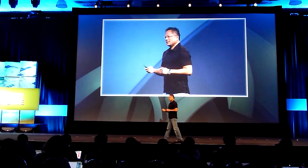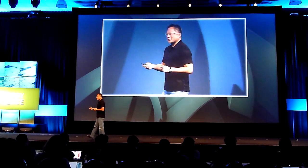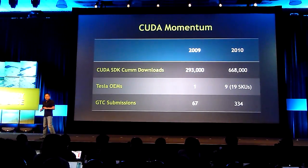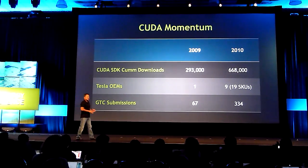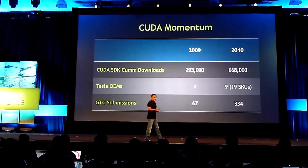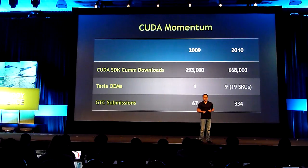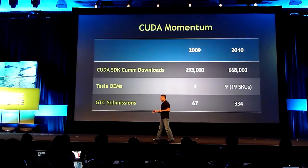The third metric I selected reflects the research that people are actually doing — how they're really using this technology for discovery. The one I chose was GTC submissions. Last year we had 67 papers, which we thought was terrific for the first year of GTC. This year we had 334. Just recently at ACS — the American Chemical Society in Boston — there were 30 papers written around CUDA, or about research that was done on CUDA.